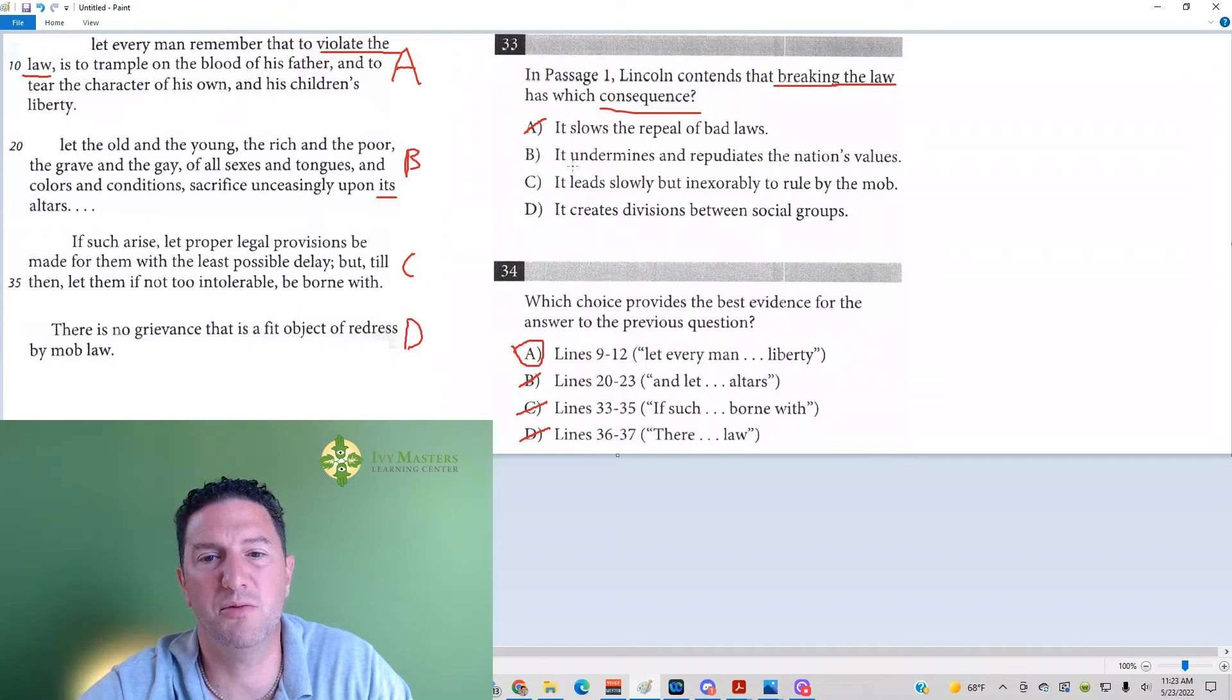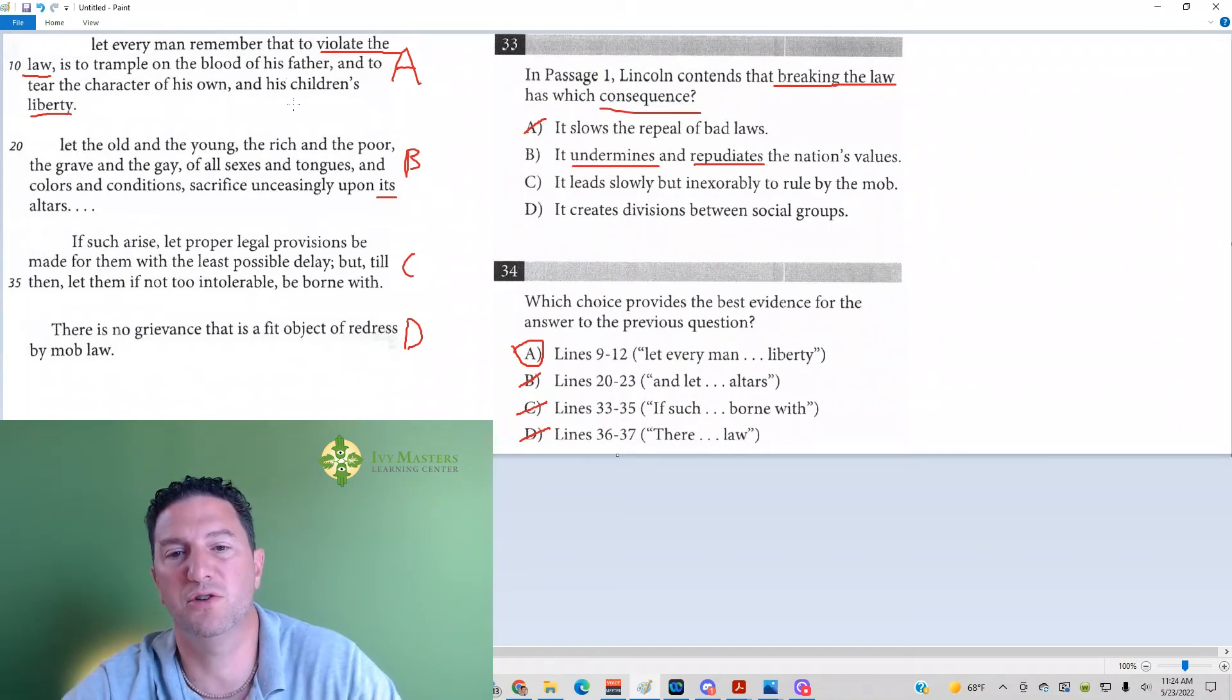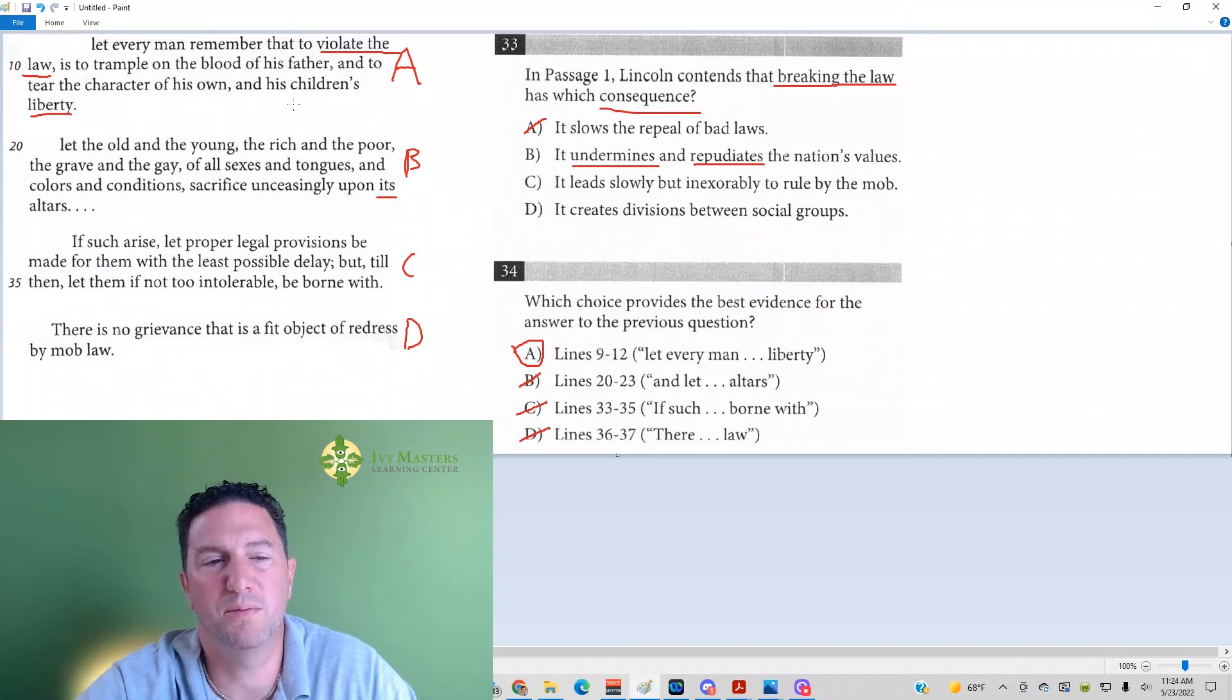Answer choice B. It undermines, which means weakens, and repudiates, or rejects, the nation's values. Now he says here, trample on the blood of his father and tear the character of his own and his children's liberty. So it sounds like liberty here is the nation's value. And it would be, if you're tearing the character of your own and your children's liberty, it sounds like you are undermining or repudiating the nation's values. It looks like B is the correct answer.